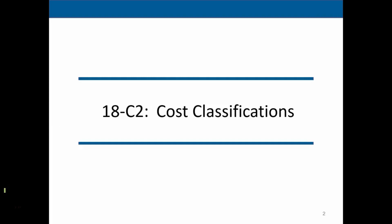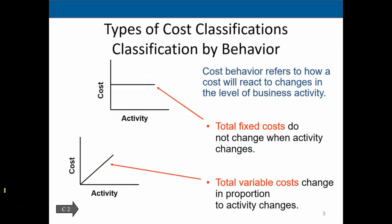In this lecture we will continue on chapter 18 and we're going to start off with cost classification. So types of cost classifications, classification by behavior. When we think about managerial accounting, one of the first things we want to do is to break up the costs in terms of the behavior of the cost. This will become apparent when we start to think about decision making. One of the types of classifications we want to think about is fixed costs versus variable costs.